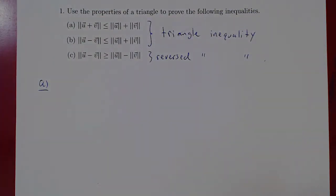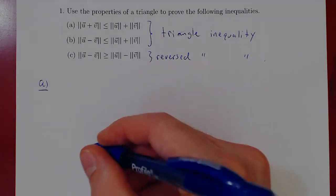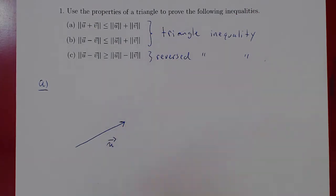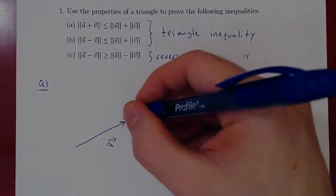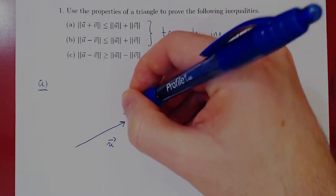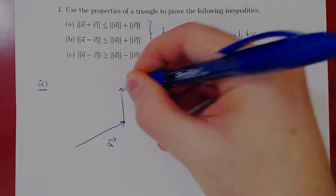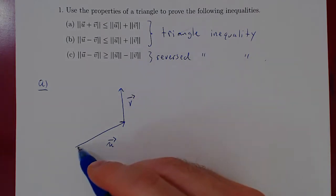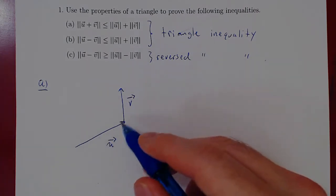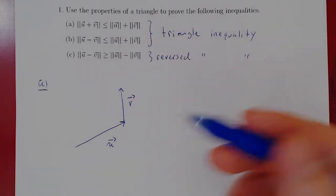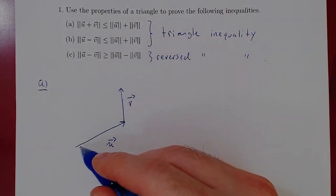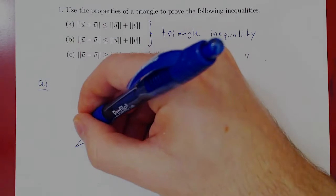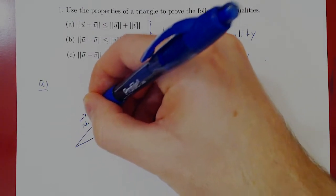We can position vectors anywhere we want in space. Assume vector u is here, and I'll position vector v so that its initial point lies on the terminal point of vector u. The idea is to complete a triangle with this picture. We have one edge given by vector u, the second edge by vector v, and we can form the third edge as u plus v.